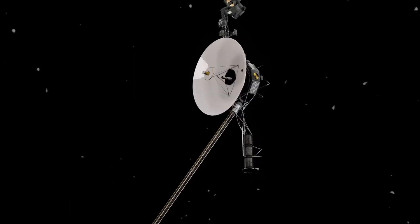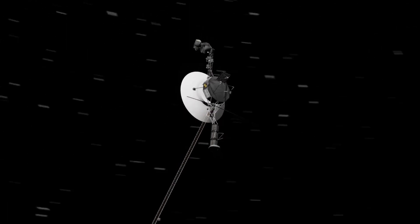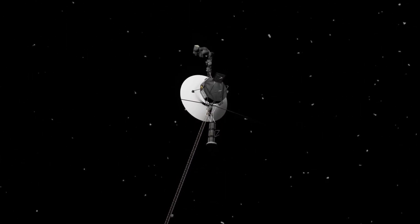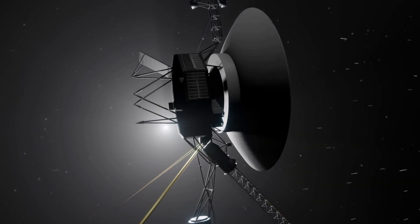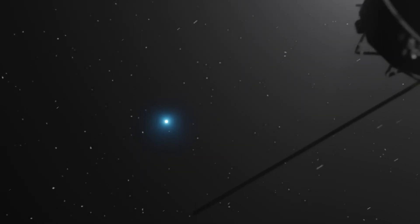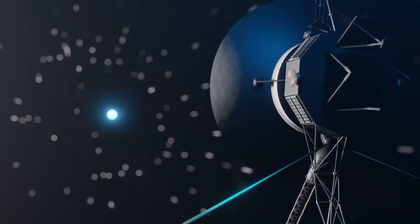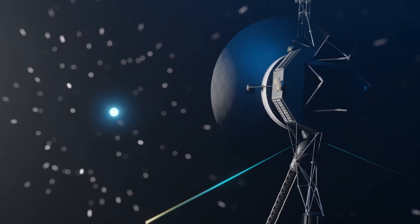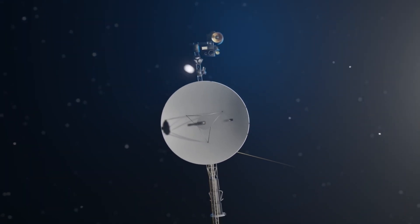If Voyager took an image today, it would be dark, but you would still see the sun and some planets as tiny, faint pixels. Perhaps the most incredible thing is that despite traveling 23 billion kilometers, the star constellations in our sky would look exactly the same. If Voyager wanted a different perspective of our galaxy, it would need to travel thousands of light years just to see a slight shift in the stars.